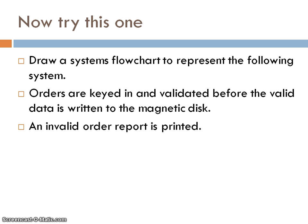Okay, the video is now playing again. So unless you have drawn an answer, don't progress with the video. The program was, the system flowchart was to represent orders being keyed in, validated before the valid data is written to a magnetic disk. An invalid order report is printed.